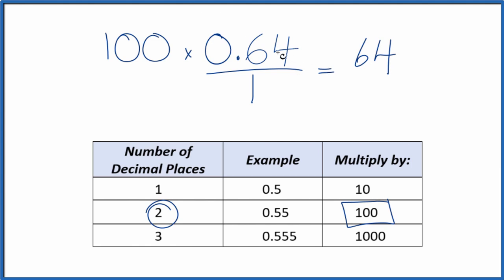So 0.64 times 100, that's going to equal 64, and that's our whole number. But we can't just multiply the numerator. We also have to multiply the denominator by 100. That's because 100 divided by 100, it's just 1. So we're multiplying by 1, and we don't change the value, just the way it's written. So 100 times 1, that's 100, and we have our fraction.